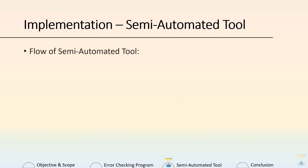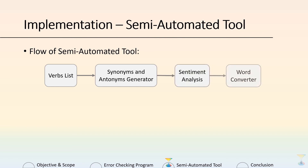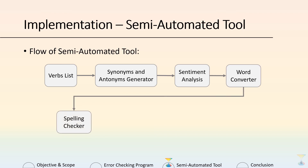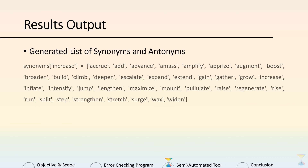Another part of the implementation is the semi-automated tool for synonyms and antonyms. The flow is as follows: first, we use a list of verbs from VerbNet, which is passed into the generator to produce synonyms and antonyms. To ensure semantic and affective similarity, we use sentiment analysis to get polarity scores. The result is passed through a word converter to ensure no duplication between UK and US English. Then, before generating the output file, we apply a spelling checker as a recommendation. For example, for the verb 'increase', synonyms are verbs with similar meaning and the same polarity, while antonyms — like 'decrease' and 'weaken' — have opposite meaning and polarity.